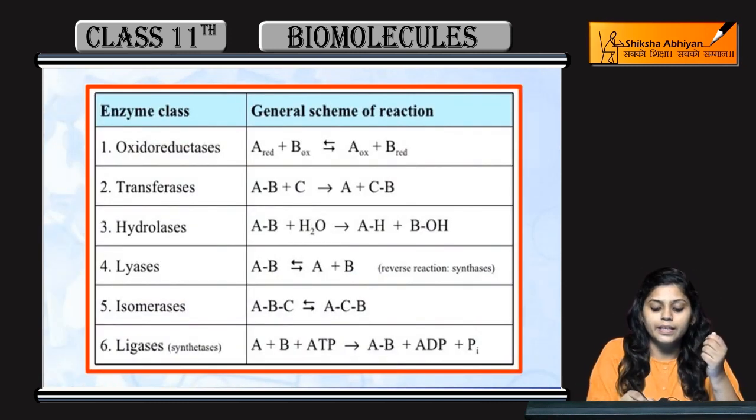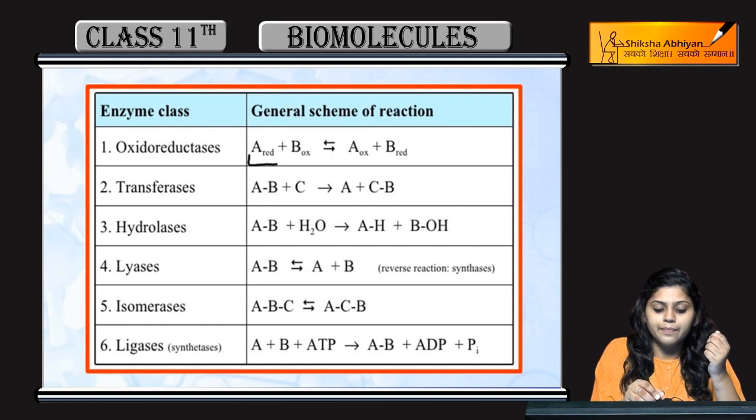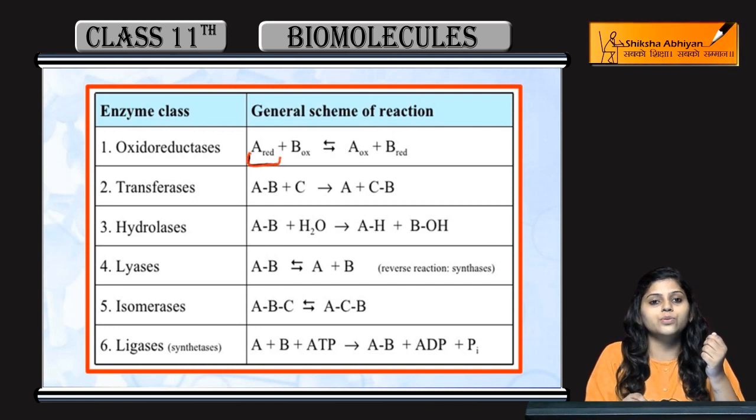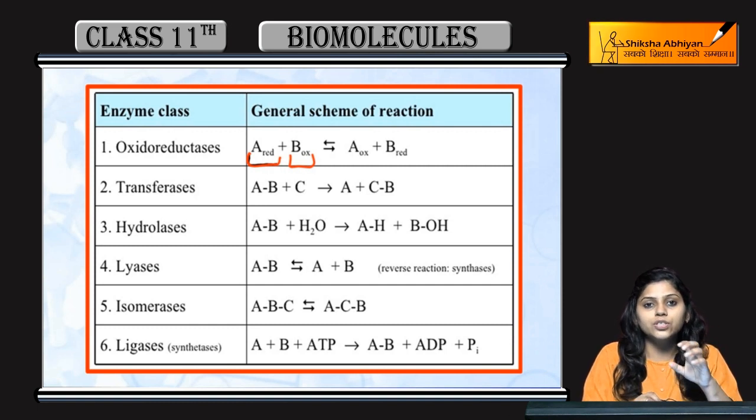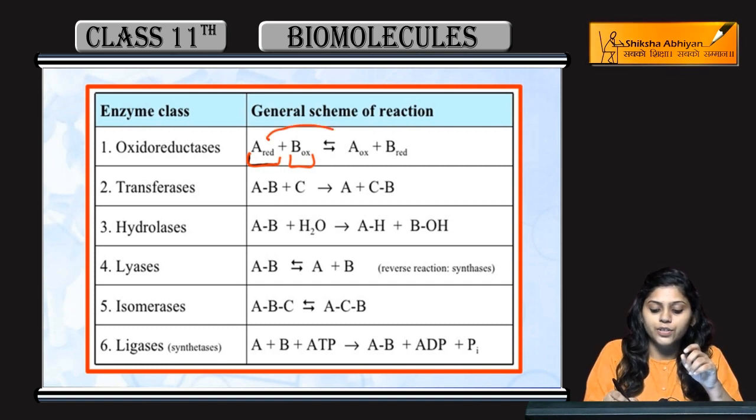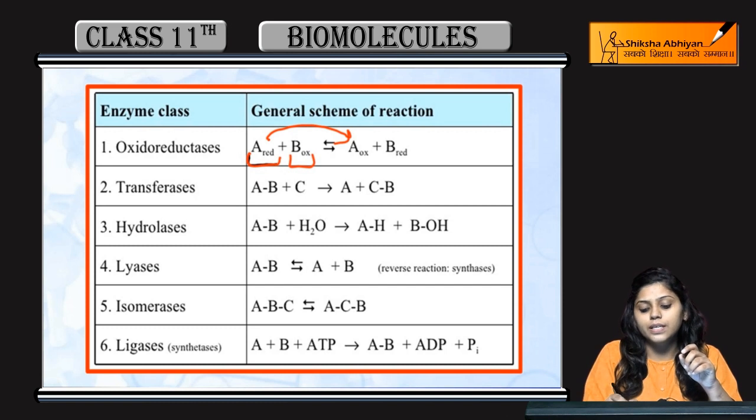Let's look at the general review. This is A, which is in reduced form, and B is in oxidized form. In oxidoreduction reaction what happens? Reduced form is oxidized and oxidized form is reduced.